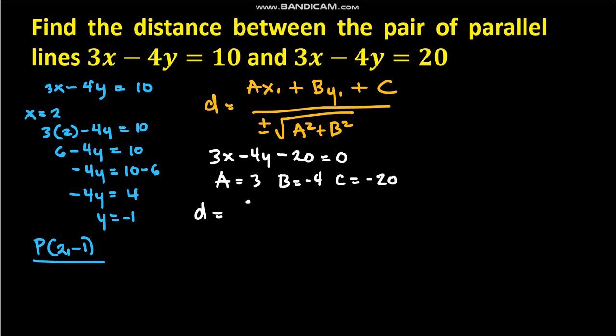By substitution, d equals 3 times 2 minus 4 times negative 1 minus 20. The sign of the denominator depends on C. Our C here is negative, so we will use a positive.